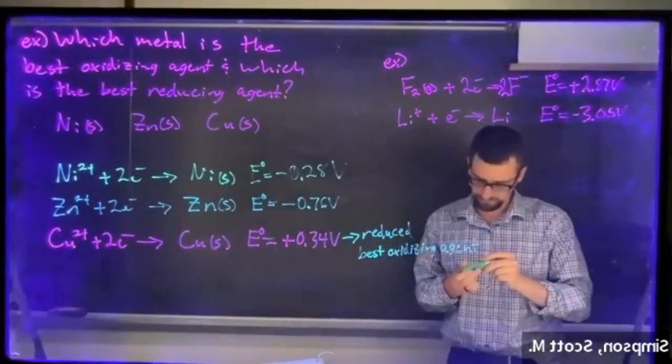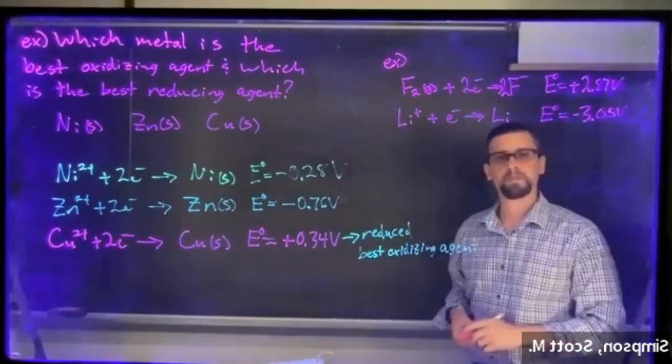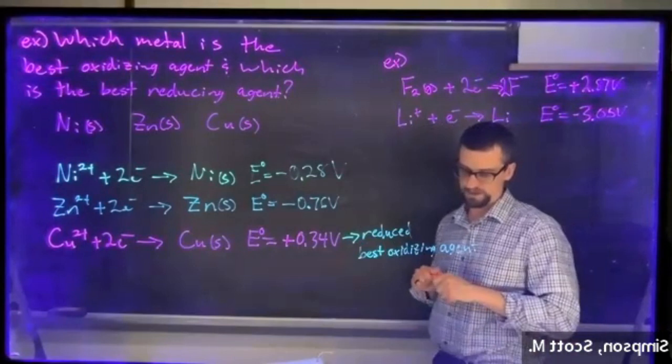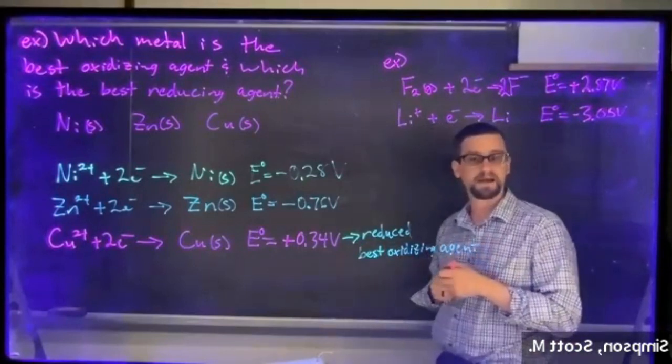Now, the most negative value, this is the one that is most likely to be oxidized, and therefore is the best reducing agent.